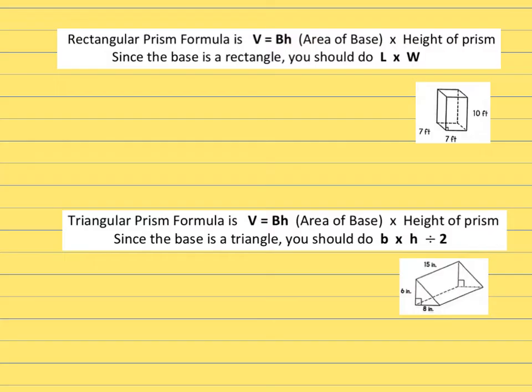A couple things we need to know is a rectangular prism – the formula for it is V equals capital BH. Capital B is different than lowercase b – capital means the area of the entire base. And then height for H is the height of the entire prism.